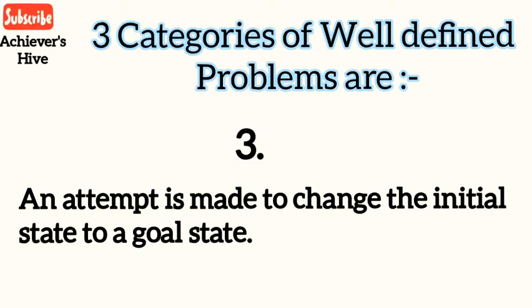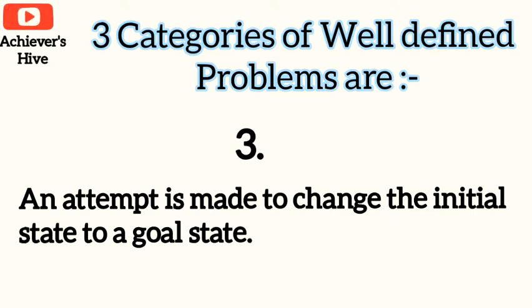The third type is transformation problems. In these problems, an attempt is made to change the initial state to a goal state — that is, to its final state. According to Greeno (1978), solving transformation problems primarily requires skills in planning based on a method called means-ends analysis. Means-ends analysis requires identifying differences between the current state and the goal state, and selecting operations that will reduce those differences.